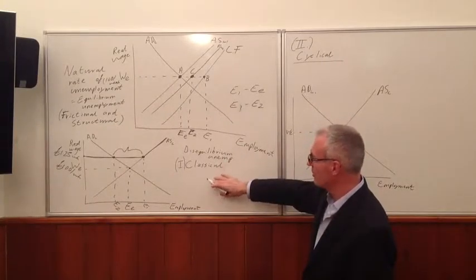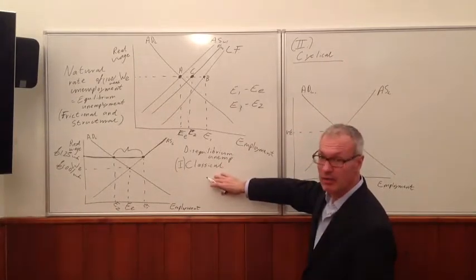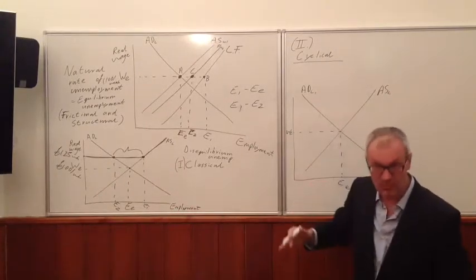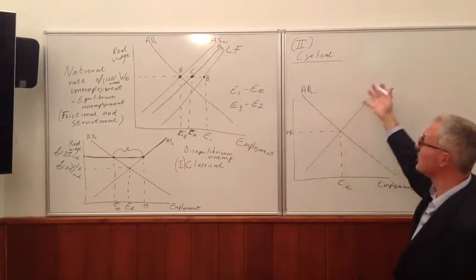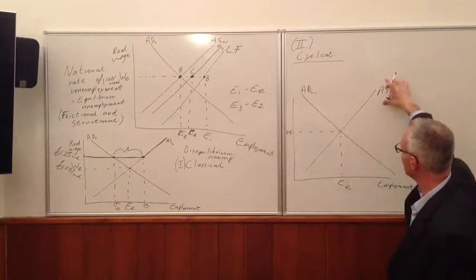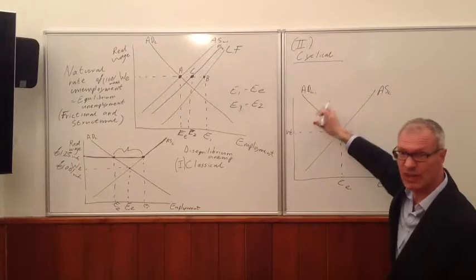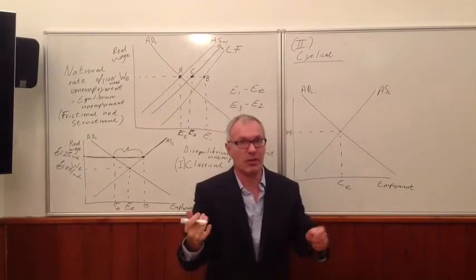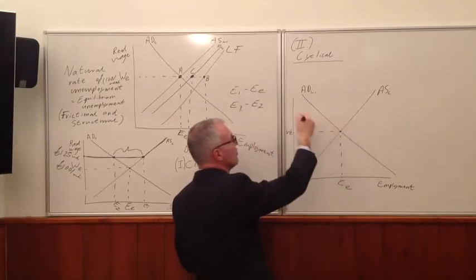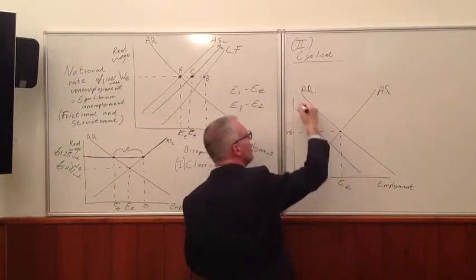So this is one type of disequilibrium unemployment. A second type, of course, of disequilibrium unemployment, is what's known as cyclical unemployment, or Keynesian unemployment. And here we've got aggregate supply again, we've got aggregate demand for labour. How will we show this? Simply by a shift of the aggregate demand for labour to the left.